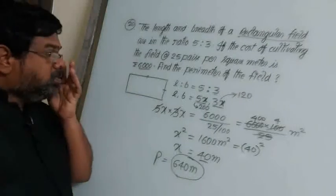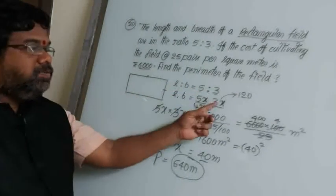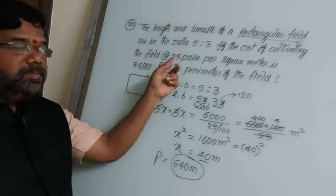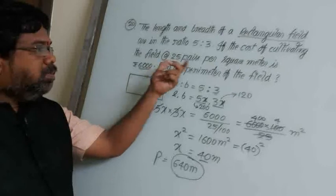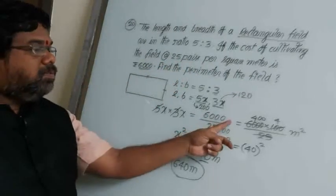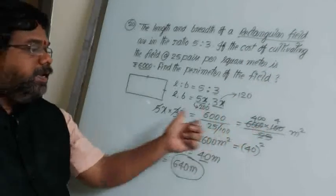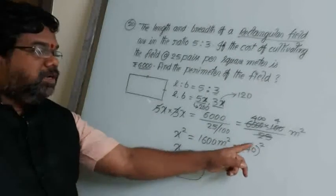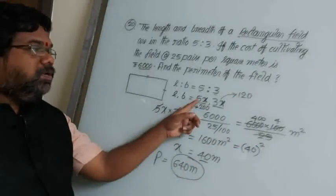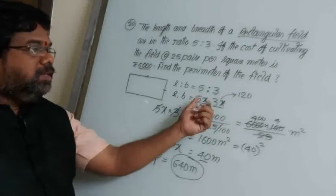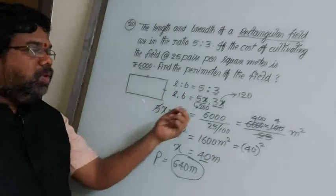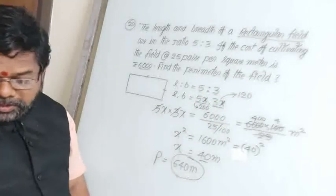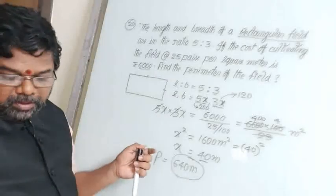So the perimeter of the field is 640 meters. Summary: ratio 5:3 gives 5x and 3x. From total cost and per square meter cost we get area, solve for x = 40, then perimeter = 2(200 + 120) = 640 meters.